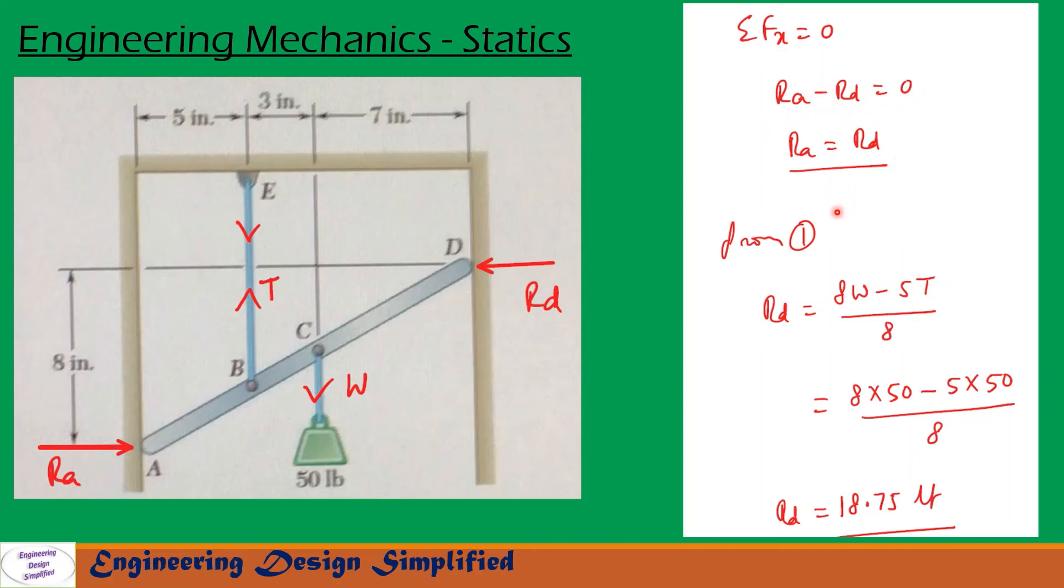Now from equation 1, we have seen that RD equal to 8W minus 5T divided by 8. Let us substitute T that we have calculated and W equal to 50 lb. We get RD equal to, after substituting the values and simplification, RD equal to 18.75 lb.